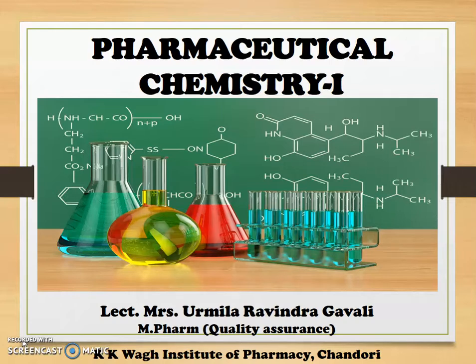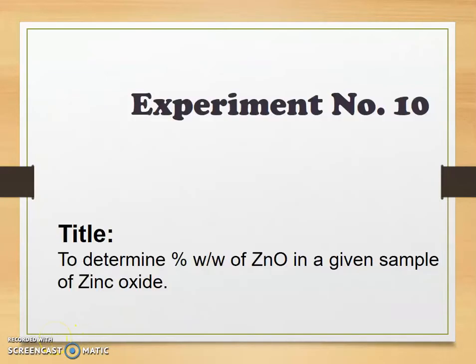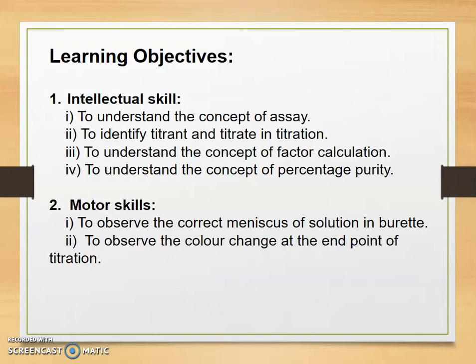Let's start with the assay. Experiment number 10: the title of the experiment is to determine percent weight by weight of zinc oxide in the given sample of zinc oxide. Learning objectives: after watching this video, students will be able to learn intellectual skills — to understand the concept of assay, to identify titrate and titrant in the titration, to understand factor calculation and percentage purity. Motor skill: to observe the correct meniscus of the solution in the burette and to observe the color change at the end point of the titration.